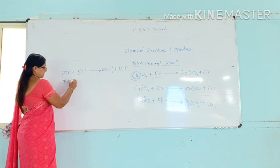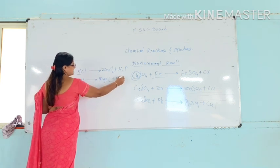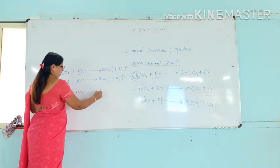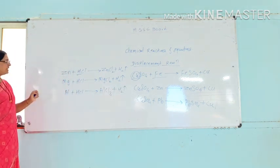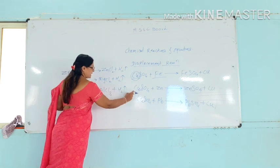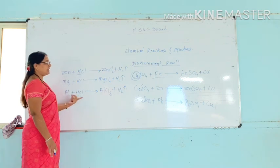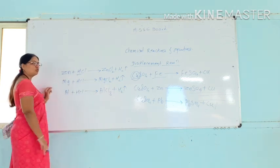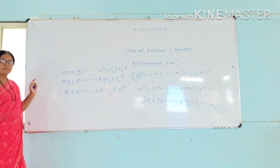Magnesium reacts with hydrochloric acid to form magnesium chloride and hydrogen gas becomes separate. Aluminium reacts with hydrochloric acid to form aluminium chloride and hydrogen gas becomes separate. This is a practical situation where you can see that this reaction will be a displacement reaction.